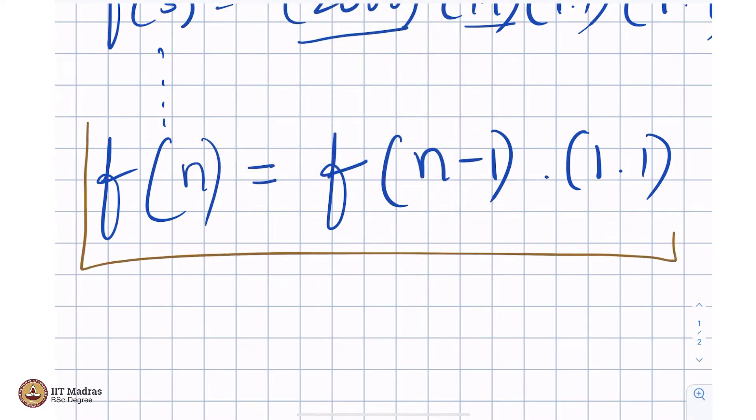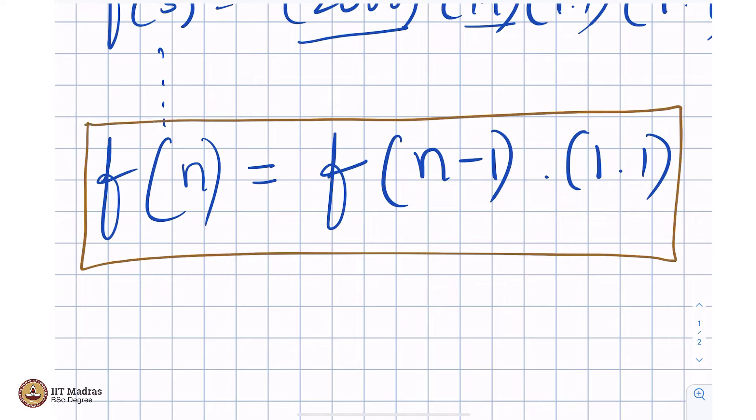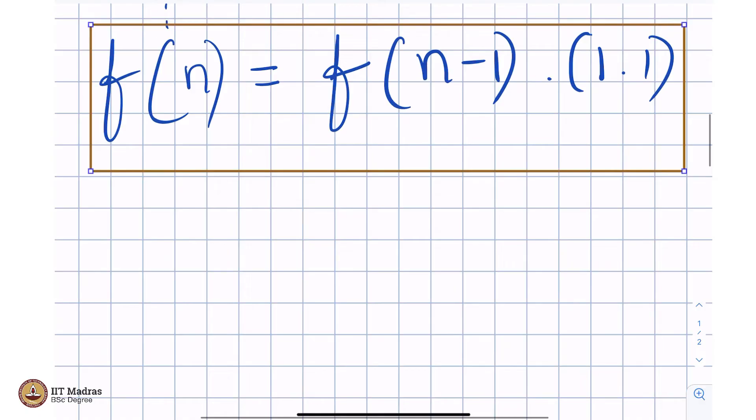Let me box this for a reason that it is very important and also interesting. f(n) equals f(n-1) times 1.1. This is multiplication and this is decimal 1.1. To tell you what f is, I am using f. To tell you how to compute f(n), I will ask you to compute and give me what is f(n-1) and I will multiply 1.1 to it.